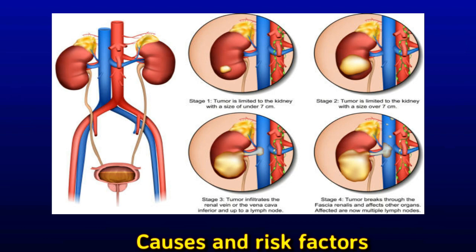Beckwith-Wiedemann syndrome is a rare condition that occurs only in children and is characterized by abnormal growth. Lynch syndrome is a genetic disorder most commonly associated with the development of colon cancer as well as some other types of cancer.